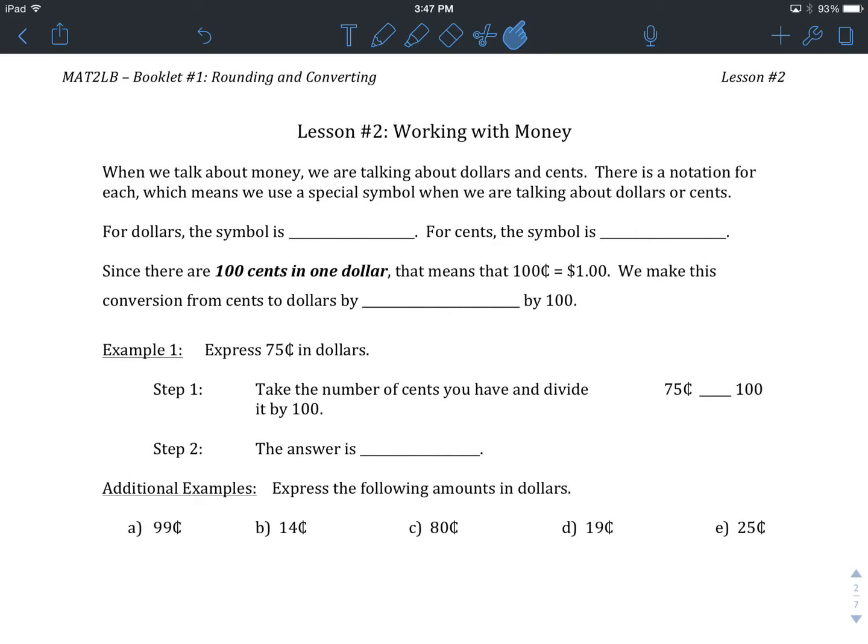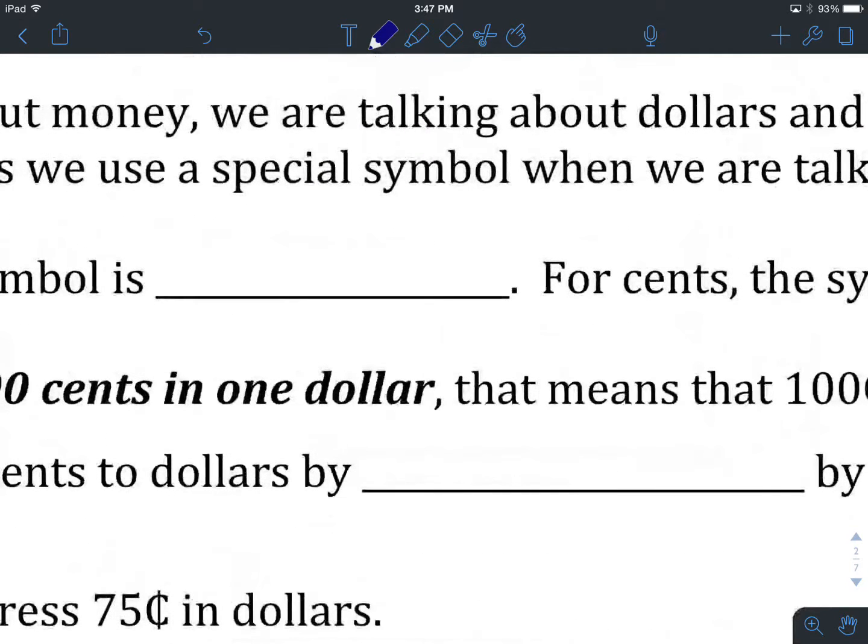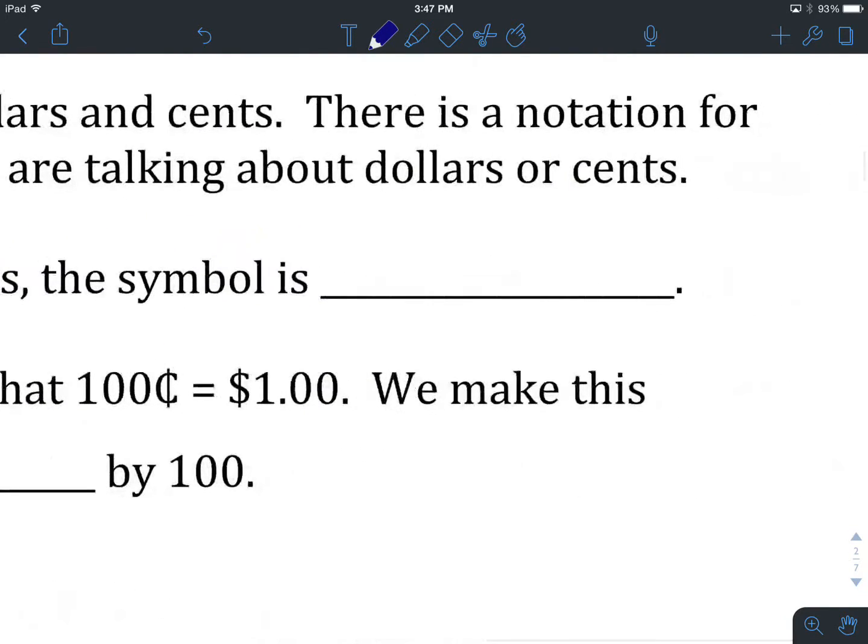When we talk about money, we're talking about dollars and cents. There is a notation for each of these, which means that we use a special symbol when we're talking about either dollars or cents. You likely know these, but if you don't, let's go over them now. For dollars, the symbol that we use is the dollar sign. And for cents, the symbol is like a C with a vertical line through it.